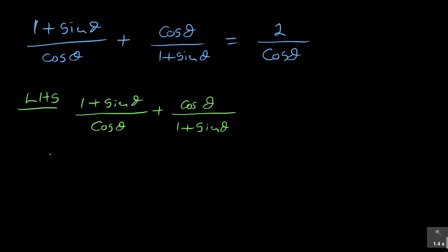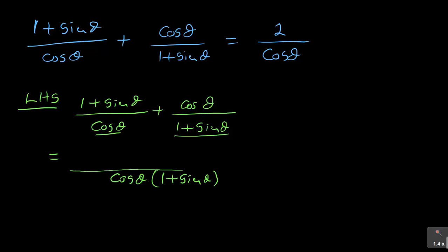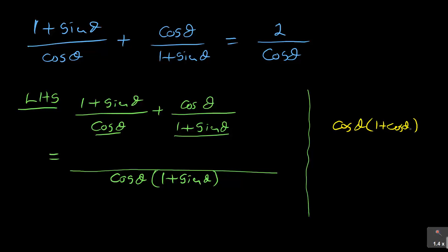Now because I chose this side, I continue working from that side. This is equal to — if I use these two as my common denominator, I have cos θ and then 1 + sin θ. Students always confuse when working with fractions. My common denominator is cos θ · (1 + sin θ).